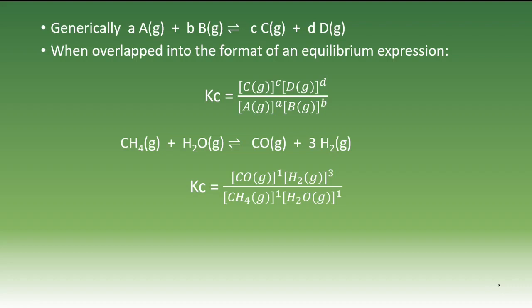Given that reaction that we had on the previous slide, if we have a look at that, you'll notice that the products are listed in the numerator, the concentration of carbon monoxide to the power of one times the concentration of hydrogen to the power of three. This would be divided by the concentration of methane to the power of one times the concentration of water vapor to the power of one. Now the ones in this case don't have to be included. I've just left them there to be kind of overt about what's going on.